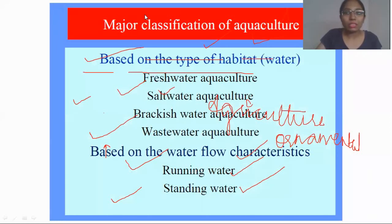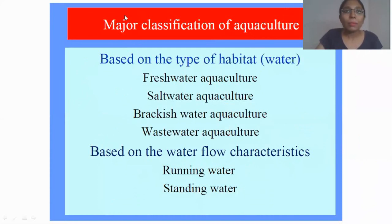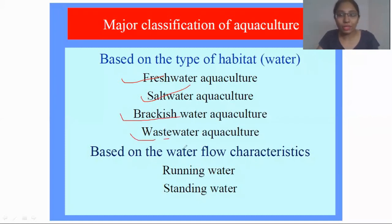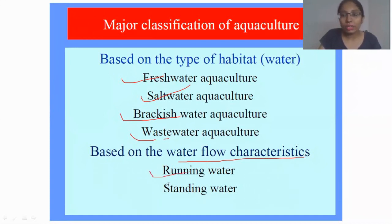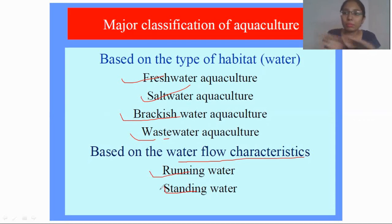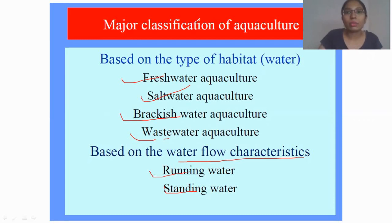Now we will study the classifications of aquaculture. Based on the type of habitat, we have freshwater aquaculture, saltwater aquaculture, brackish water aquaculture, and wastewater aquaculture. Based on water flow characteristics, we can have running water or standing water. Standing water means if we do it in a pond. Running water means a dam or river flow is constructed and used for aquaculture.